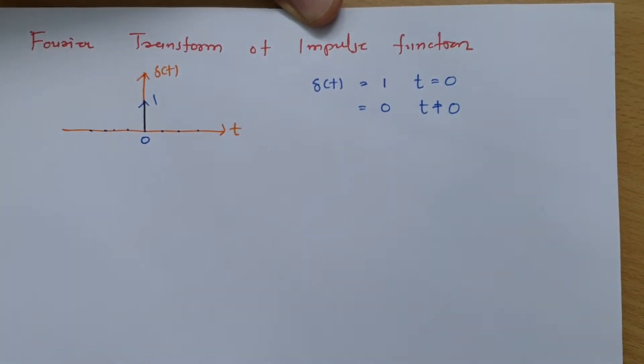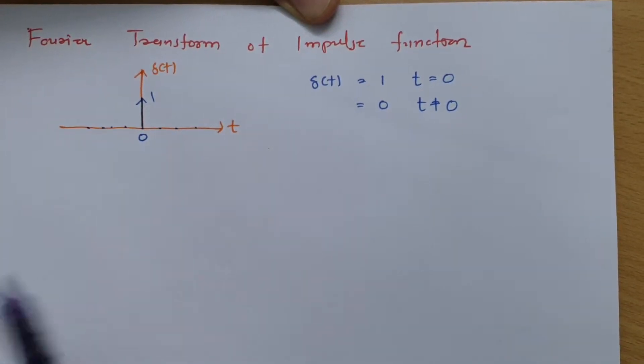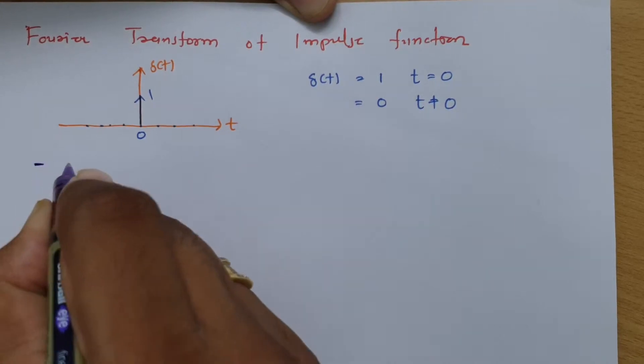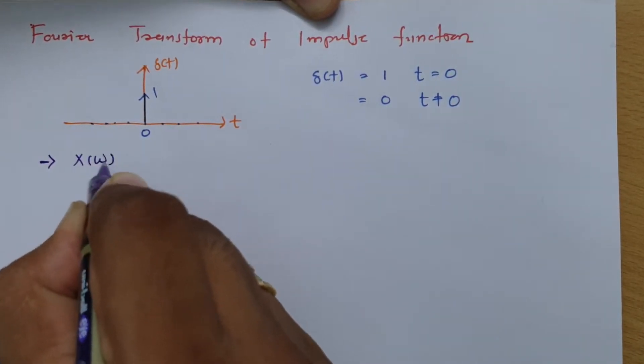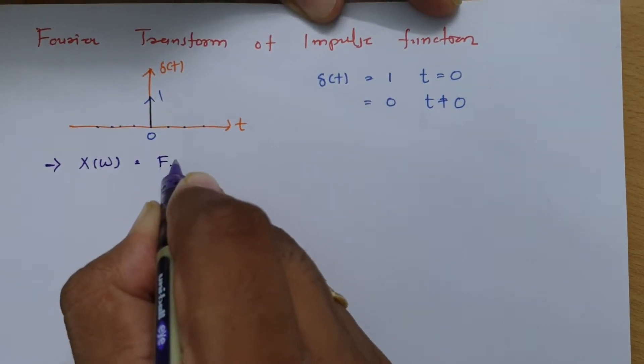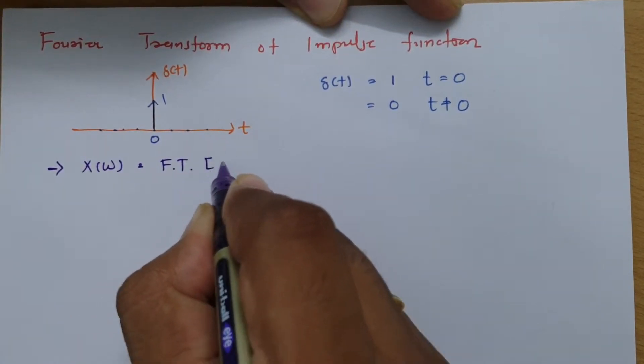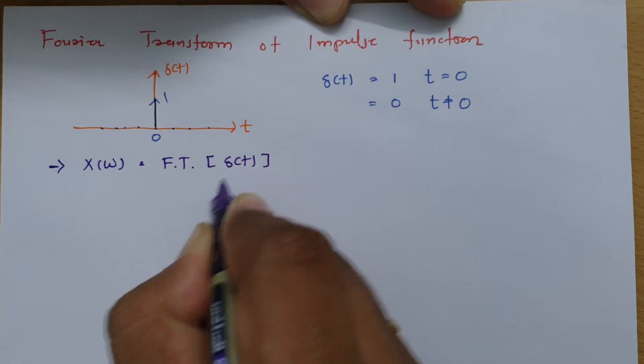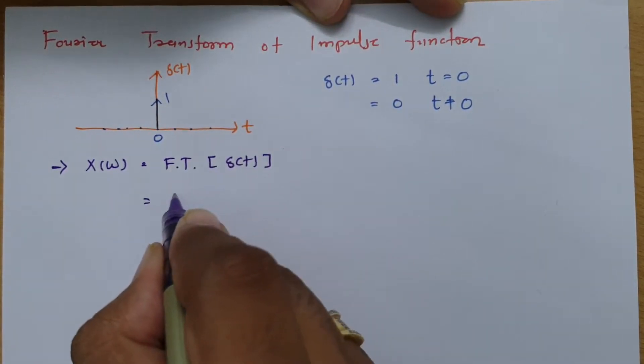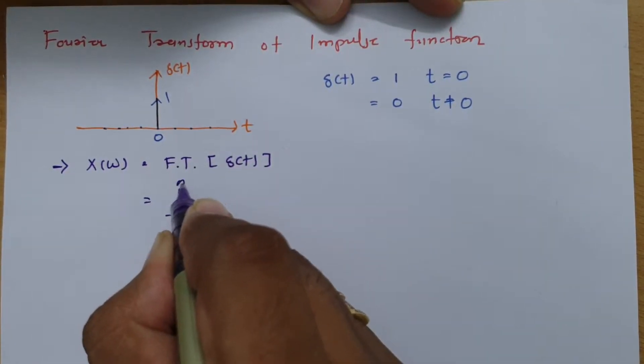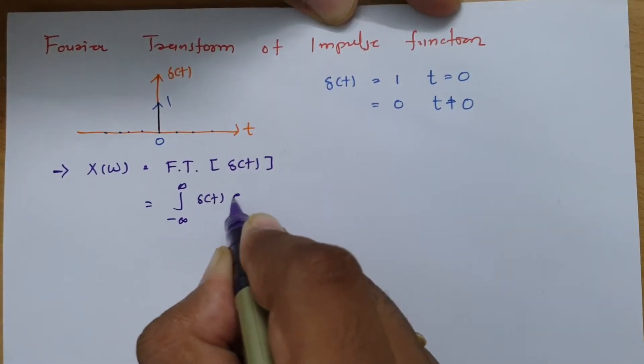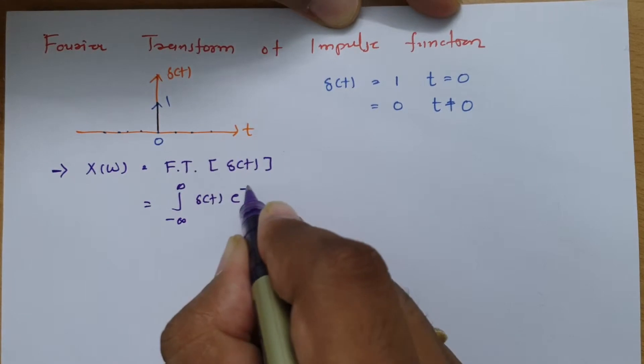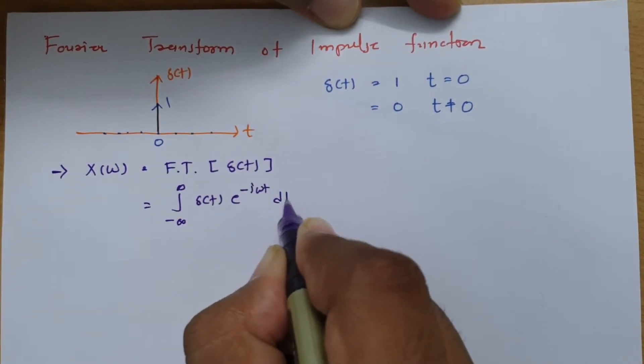Now let us calculate Fourier transform of this. So Fourier transform, if I say x of omega, that is Fourier transform of this signal delta of t and basic formula that we all know integration varies from minus infinite to infinite delta t into e to the power minus j omega t dt.